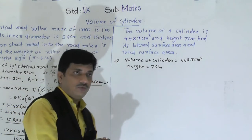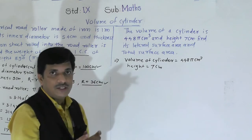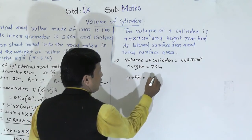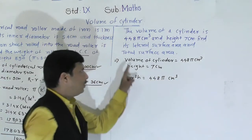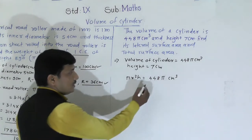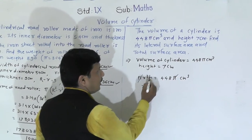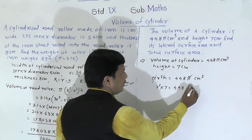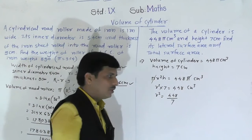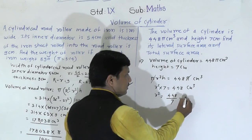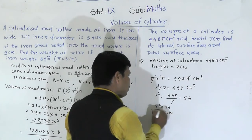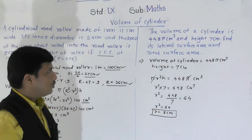Volume is given, so with the help of volume we must find the radius, since radius is not given. The formula for volume of a right circular cylinder is πr²h = 448π. We can cancel π from both sides, giving r² × h = 448. Since h = 7, we get r² = 448 ÷ 7 = 64, so r = 8 centimeters.